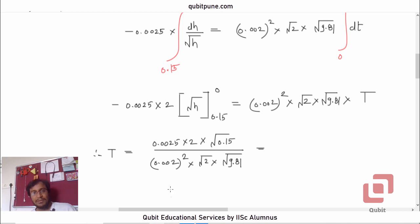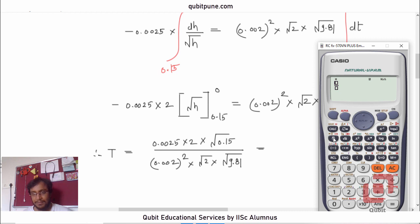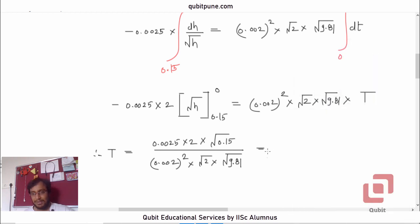Let us use the calculator to get the value of t now. So, 0.0025 × 2 × √0.15 divided by (0.002)² × √2 × 9.81. That is 109.296. We can take 109.3 seconds.